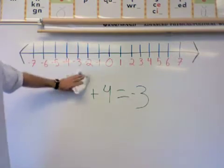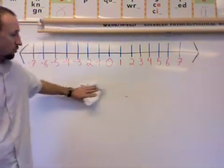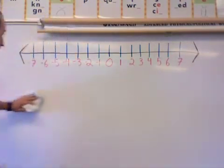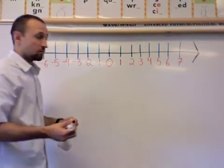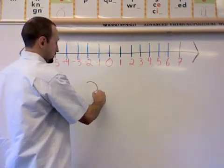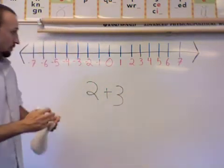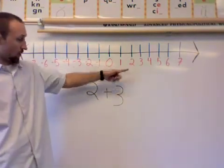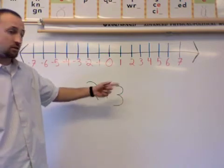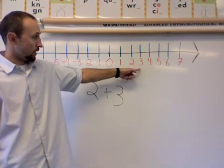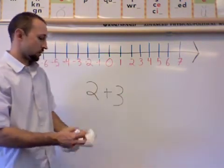Now last but not least, something that is very easy, something that most of you won't even need the number line for, what happens if I add 2 positive integers? Let's say we have 2 plus 3. I'm going to start here at 2 and I'm going to move over 3 places. Let's see where it takes me: 1, 2, 3, and as you already knew, 2 plus 3 equals 5.